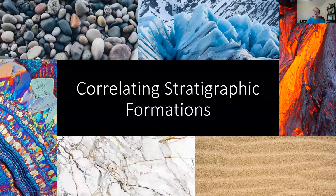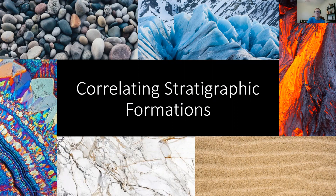When we understand how to interpret rock layers, we can start to correlate between them. This just means looking at the rock layers present in one location, looking at the rock layers present a ways away in another location, and figuring out what is happening in between these two locations beneath the Earth's surface.